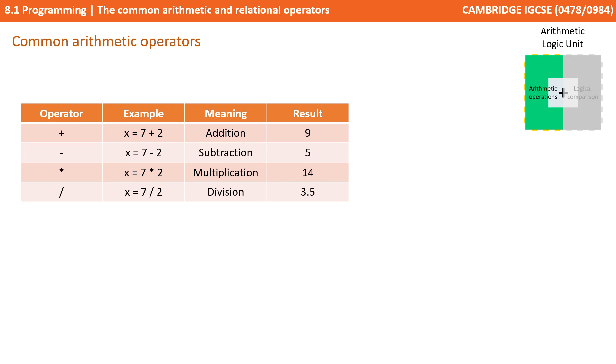There's a few others you need to be familiar with in programming and for your exam. Next, we have the exponentiation, or powers to symbol. And on a standard keyboard, that's shift 6. So here, 7 to the power of 2, x would equal 49.